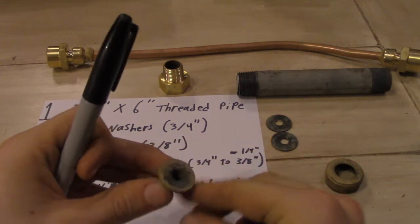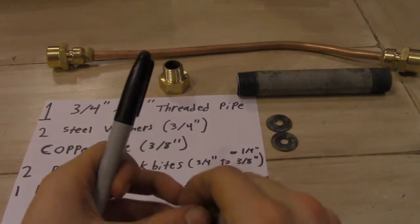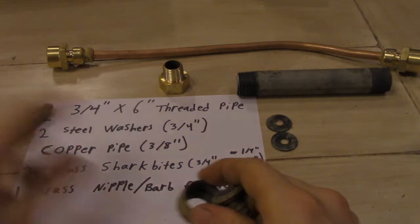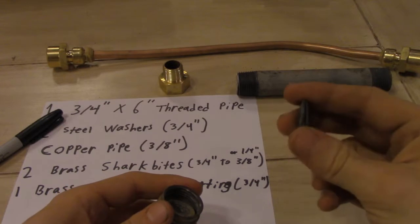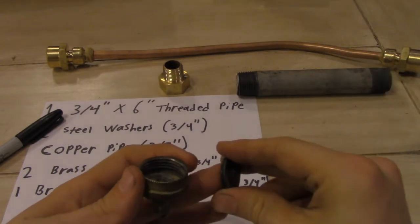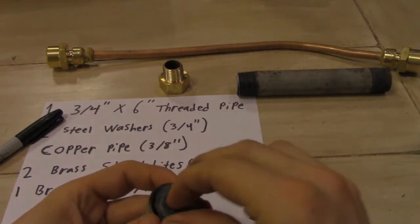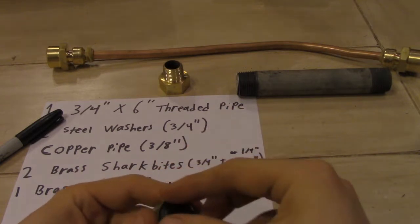So to build it, you simply take this, put that in there, take your two washers. You may have to sand them down just a little bit. Put them in like so.